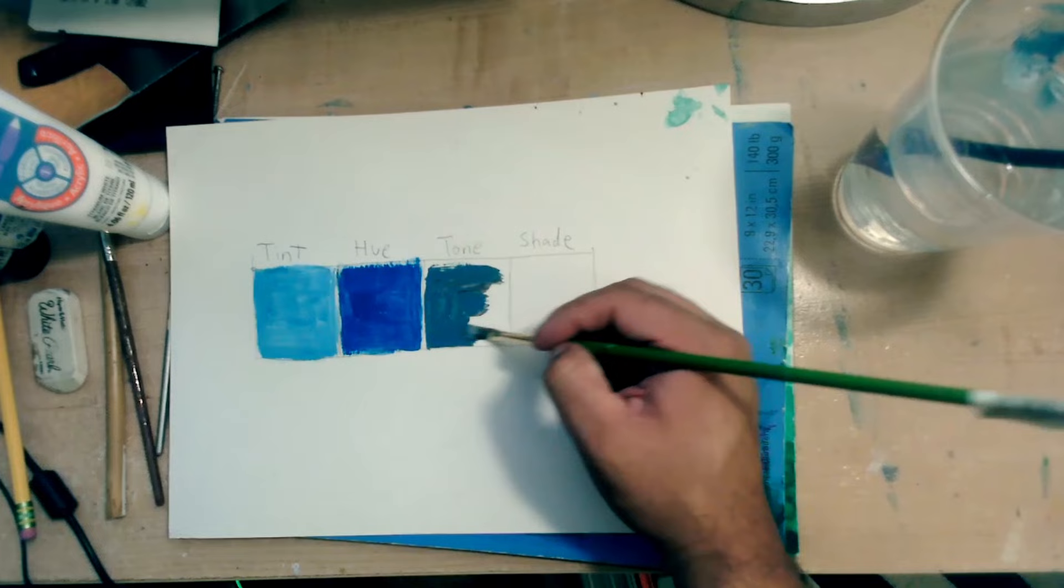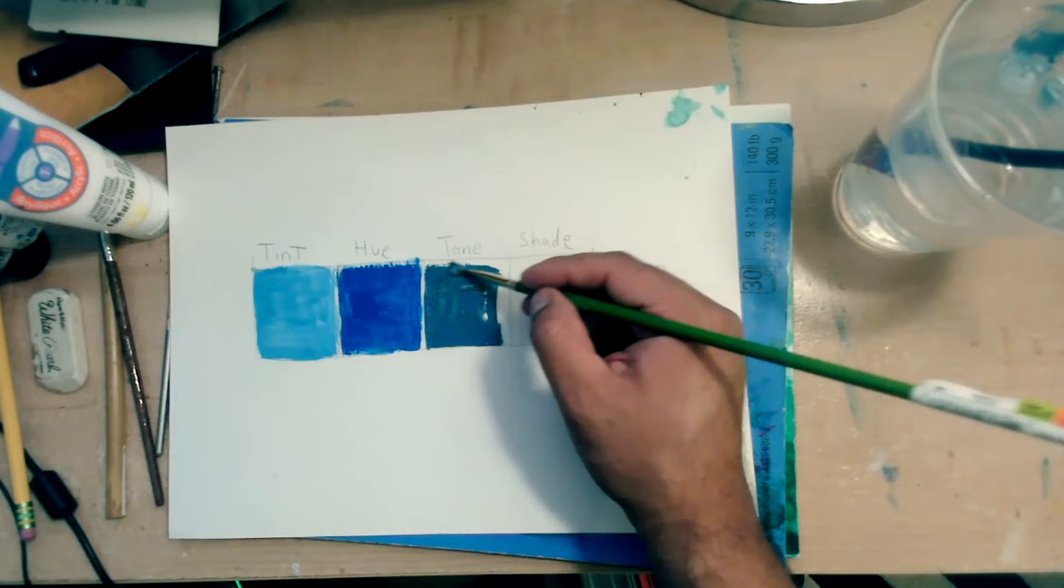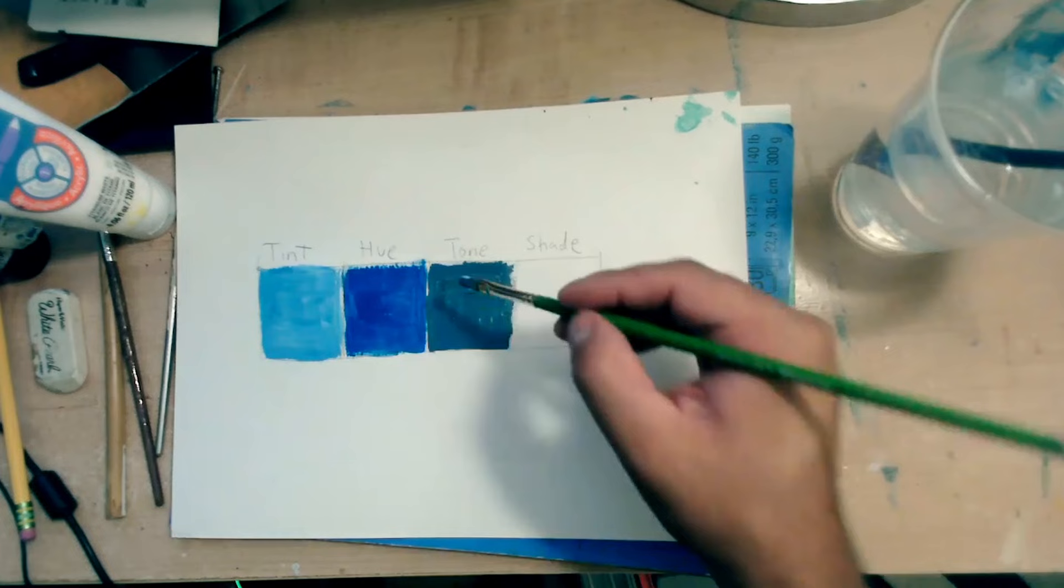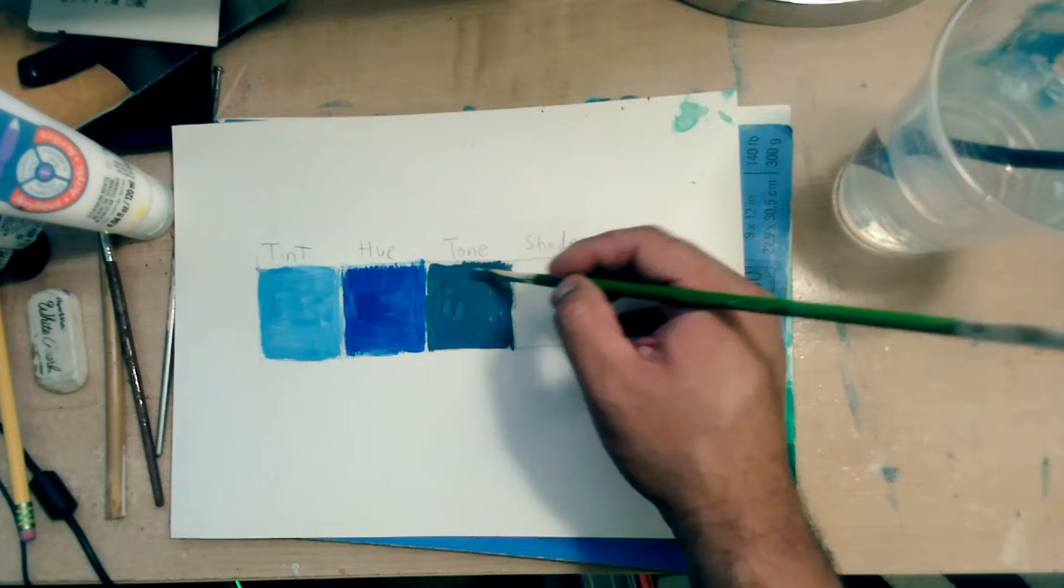It's not as vibrant as the hue. But this one is great for midtones. Soft shadows and things like that. So this is still a form of blue, but it's a little bit darker.